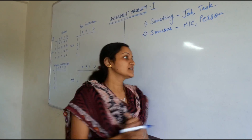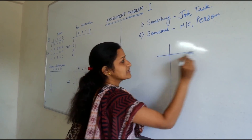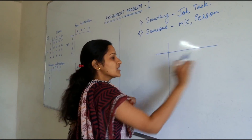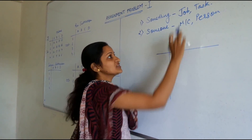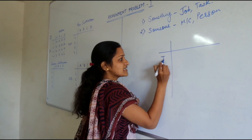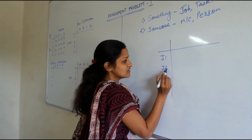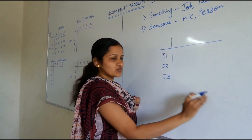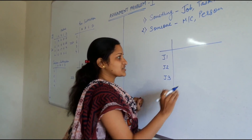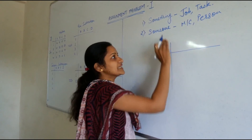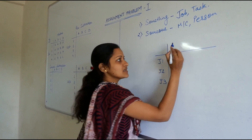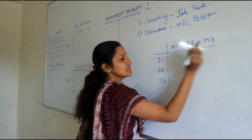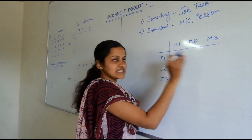Now let us see how it looks. The assignment problem has a row and column structure, same as the transportation problem, in which rows indicate the job or task. In our example those are J1, J2, and J3 — three jobs to be performed by some organization. Columns indicate the machines or processes, so let's assume those machines as M1, M2, and M3. These machines are going to perform these jobs.